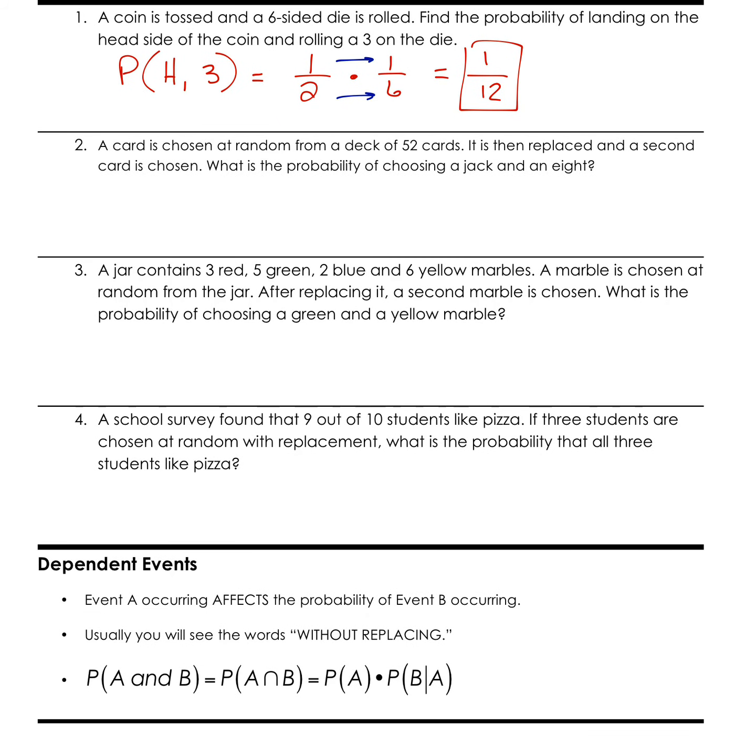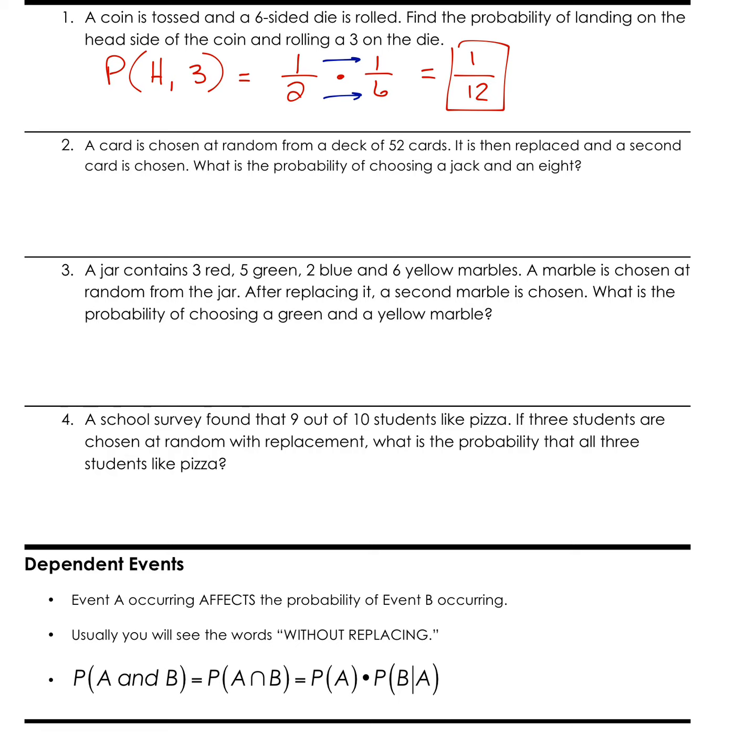Let's skip down to number four, because everybody likes pizza. School survey found that nine out of ten students like pizza. I don't know who that other student is, but he's a weirdo. So if three students are chosen at random with replacement, there's that key word that's going to help us remember that this is an independent event and not a dependent event. What is the probability that all three students like pizza? So this is a random thing. Me telling Katina that I like pizza does not affect her liking pizza, and Katina telling Ansley that she likes pizza does not affect her liking pizza.